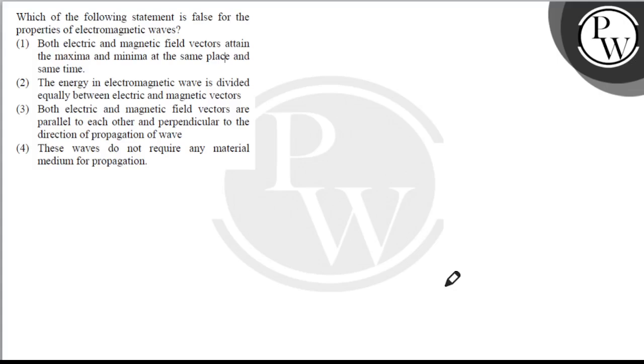Hello, the question says which of the following statement is false for the properties of electromagnetic waves? Number one: both electric and magnetic field vectors attain the maxima and minima at the same place and at the same time.